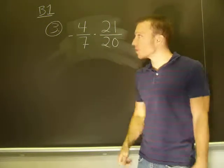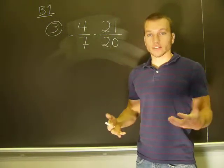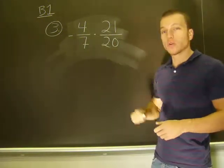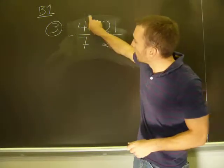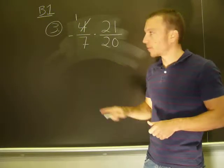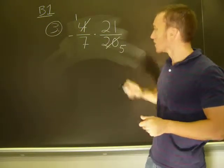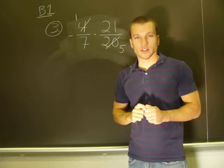So first, I can see that 4 and 20 have a common factor. The common factor is 4, so I can divide them each by 4 to reduce. 4 divided by 4 is 1, so cross it out and put a 1 up there. And 20 divided by 4 is 5. We've done some reduction there.